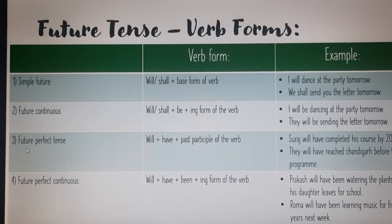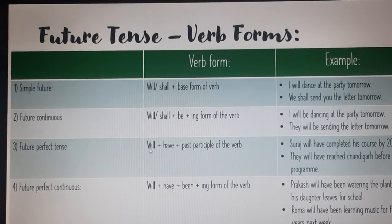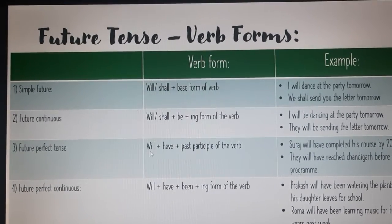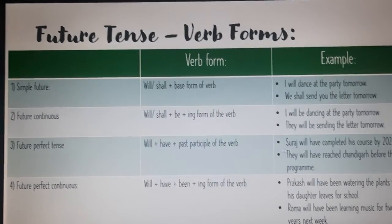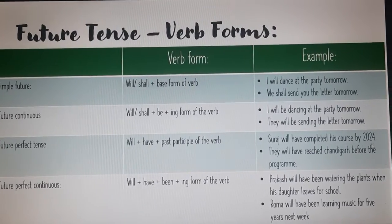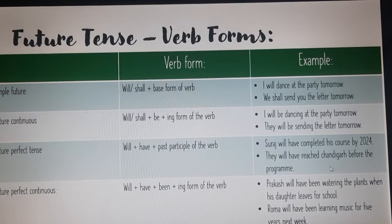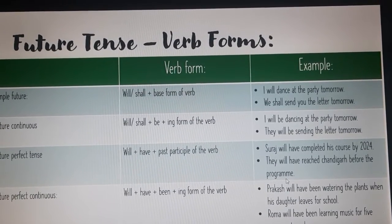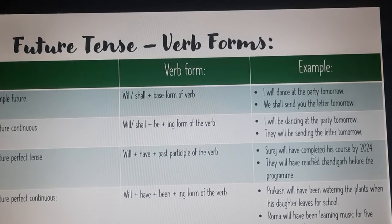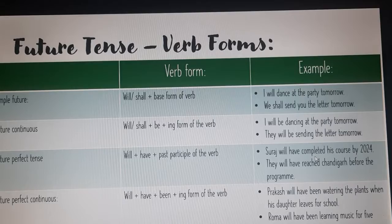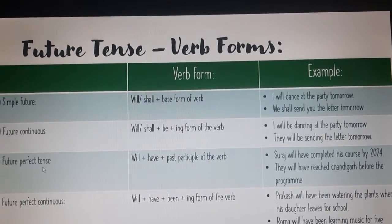The next is future perfect tense. Here 'will' plus 'have' plus the past participle of the verb is used. For example: 'Suraj will have completed his course by 2024' and 'They will have reached Chandigarh before the program.' Both of these are examples of future perfect tense.